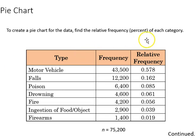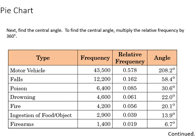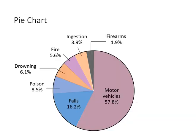To create a pie chart, you need to first find the relative frequency of each category, expressed here as proportions. Because a pie chart is a circle with 360 degrees, we adjust those 360 degrees by multiplying by the relative frequency. For example, 0.578 times 360 gives us 208, and 0.162 times 360 gives us 58.4, and so on. This gives us the angles we need to construct our pie chart, and here's the final result — a nice way to display the relative frequency of our data.